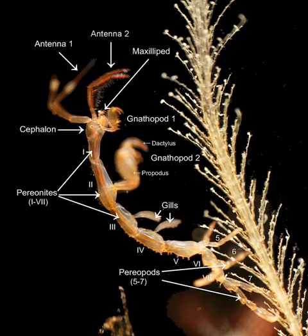Most taxa differ morphologically from other taxa. Typically, closely related taxa differ much less than more distantly related ones, but there are exceptions to this. Cryptic species are species which look very similar, or perhaps even outwardly identical, but are reproductively isolated. Conversely, sometimes unrelated taxa acquire a similar appearance as a result of convergent evolution or even mimicry. In addition, there can be morphological differences within a species, such as in Apoica flavissima where queens are significantly smaller than workers.